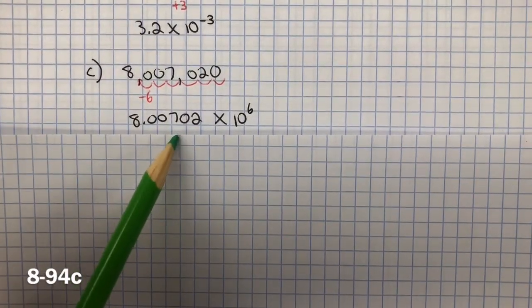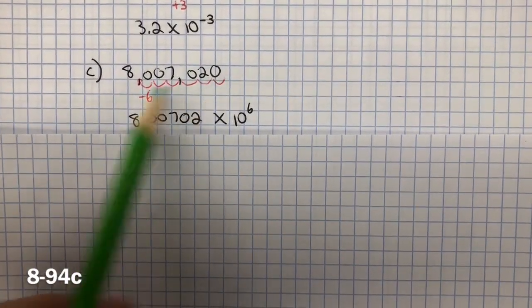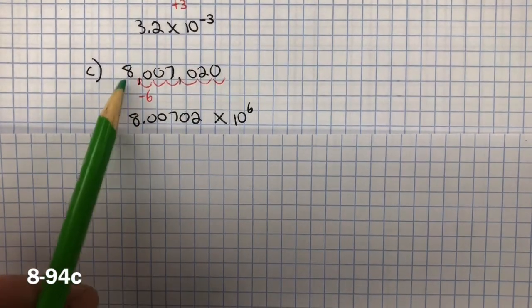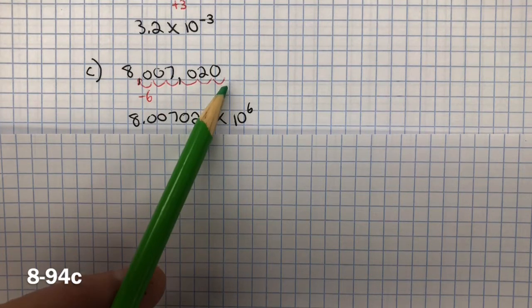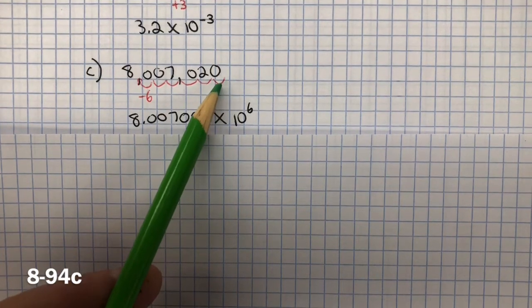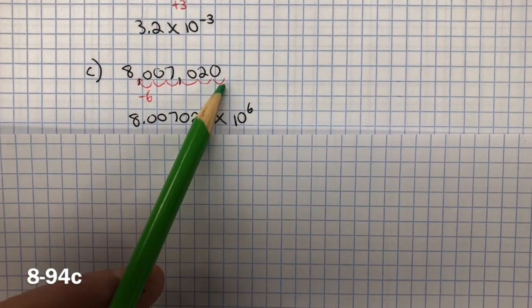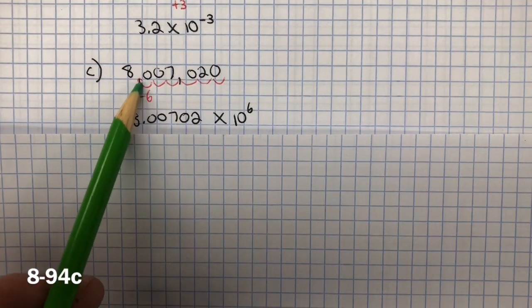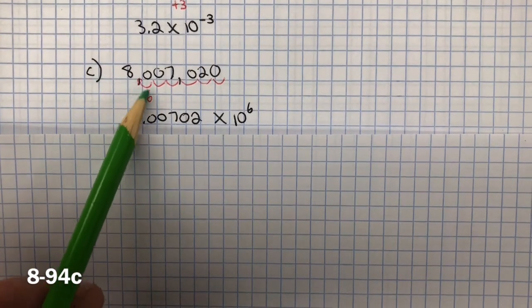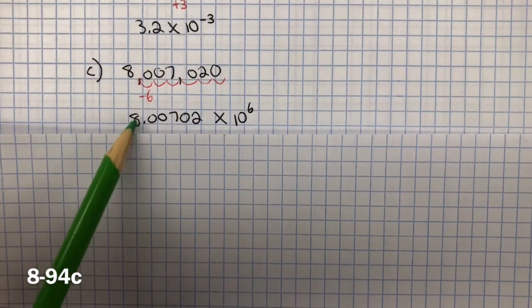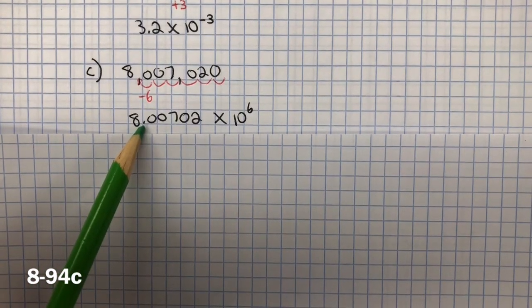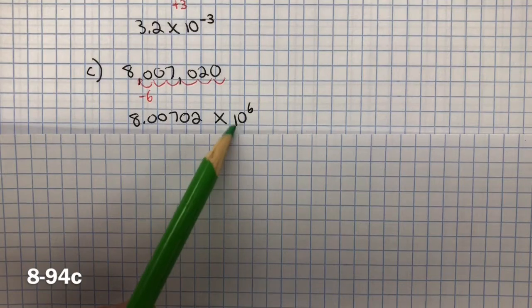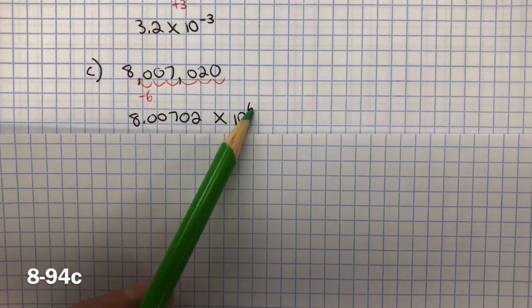For C, I have a very large number — much greater than 10. Remember the parameters: greater than or equal to 1 but less than 10. So I count 1, 2, 3, 4, 5, 6 — I decrease the value by six place values. Here's my decimal. So I have to multiply it by 10 to the sixth power.